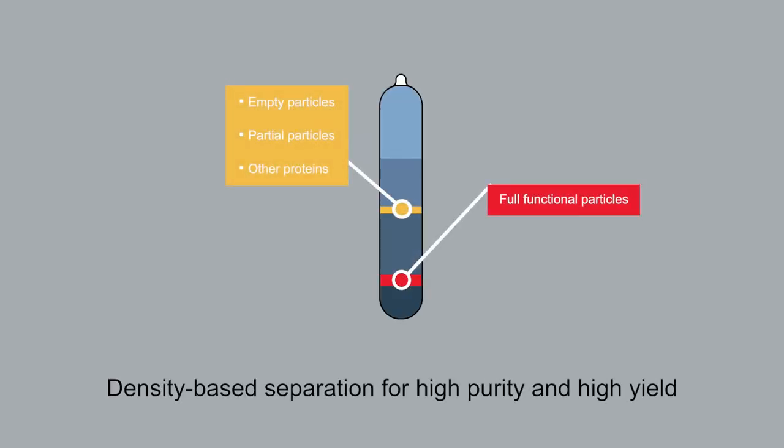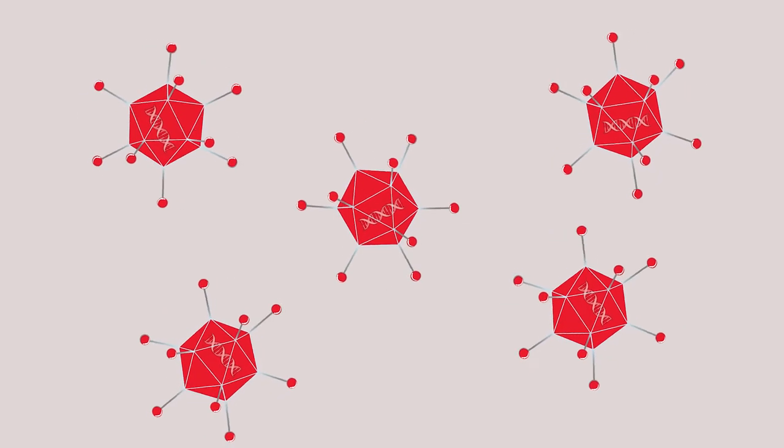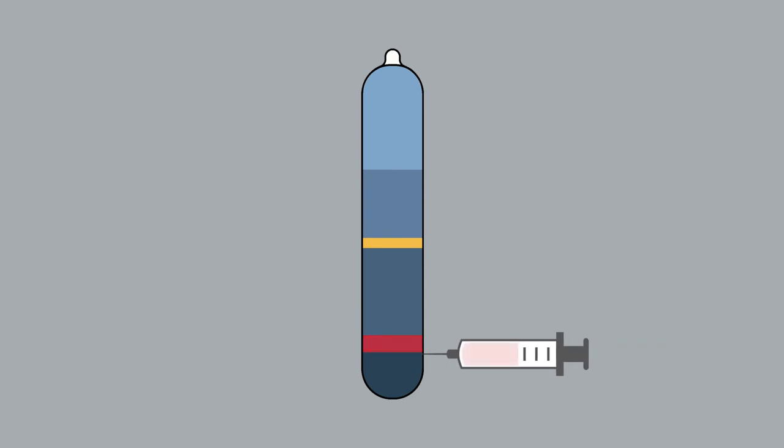Typically, full capsids are desired, and these more dense vectors are found lower in the gradient. The band of interest may then be extracted.